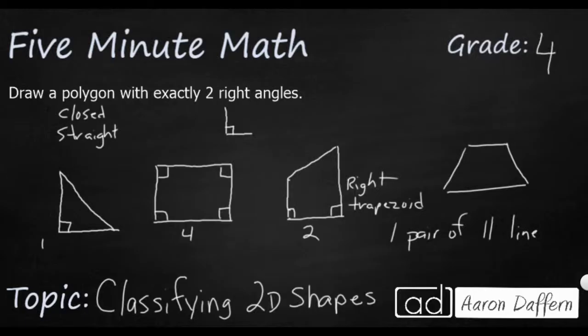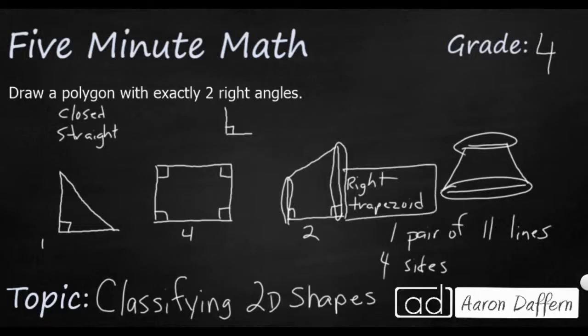So in this case, this line is parallel with this line. Well, this is a right trapezoid. It's on its side, but you have this line is parallel with this line. That makes it a trapezoid. It has to have four sides and one pair of parallel lines. And so even though it looks a little bit different than the traditional trapezoid, it is a right trapezoid because two of the angles are right angles.